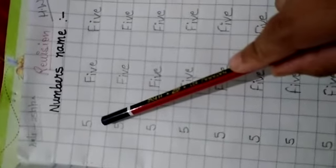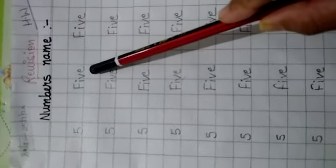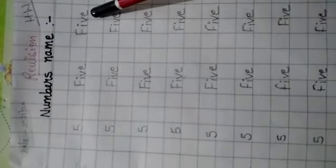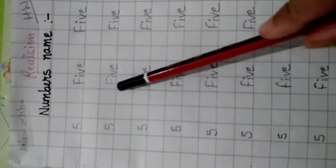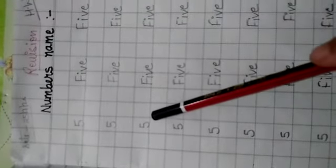Number is written 5 and the spelling is F-I-V-E 5. F-I-V-E 5. Once again F-I-V-E 5. F-I-V-E 5.